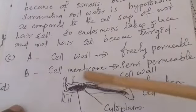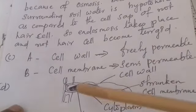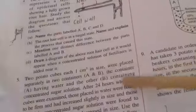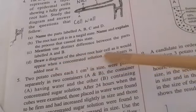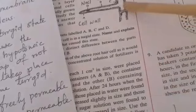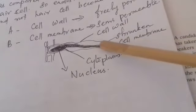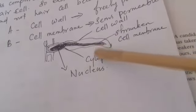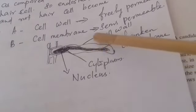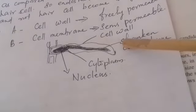Two differences between A (cell wall) and B (cell membrane): the cell wall is freely permeable, whereas the cell membrane is semi-permeable. If a concentrated solution of fertilizer is added near the root hair cell, it becomes flaccid — draw the flaccid condition of the root hair cell, showing withdrawal of the cell membrane from the cell wall and shrinkage of cytoplasm. The rest of the questions are to be done as homework.